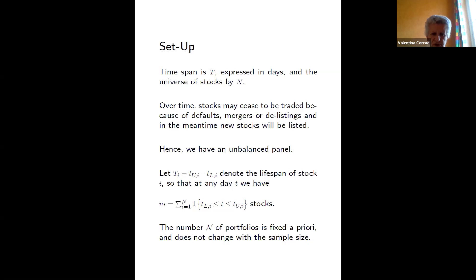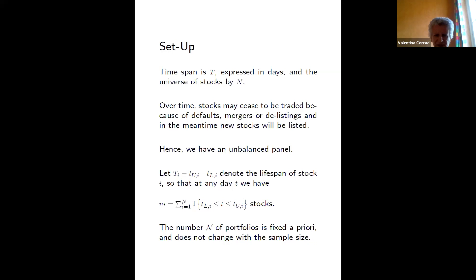We decide to construct cal-n portfolios and fix the number of portfolios, not confusing the number of stocks with the number of portfolios. This is different from a paper by Cattaneo and others, which in the context of portfolio sorts tries to find the pseudo-optimal number of portfolios — their point being that more portfolios reduce bias but increase variance. However, their setup totally ignores the issue of sorting error. Here we fix the number of portfolios.